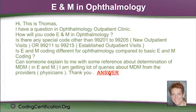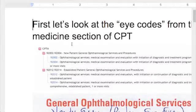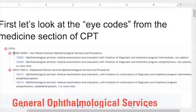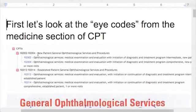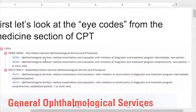I've got an answer sheet prepared here. I did a little screen capture from Supercoder and you can see 92002-004 are new patient ophthalmological services and procedures — these are the eye codes. It's the same as regular E&M in that they're divided by new versus established. There are only two codes for new and only two codes for established. The difference is the level: intermediate versus comprehensive.